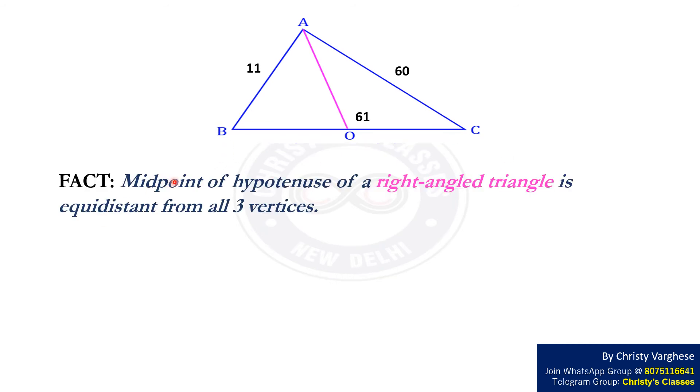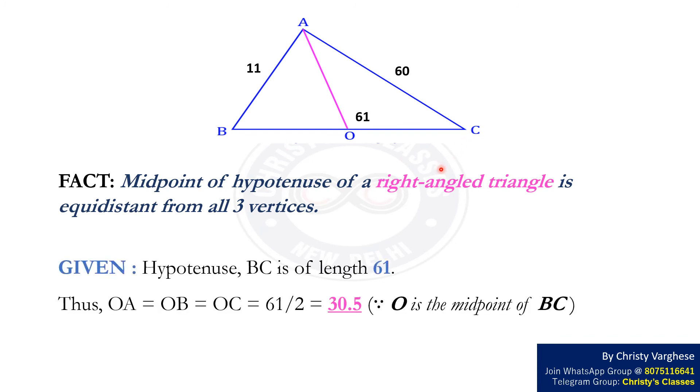In a right angle triangle, midpoint of hypotenuse is equidistant from all three vertices. Here, side BC of length 61 is the hypotenuse.